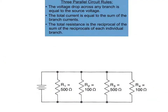Here's a second parallel circuit to work through — this one has four resistors. Our rules remain the same: voltage will be the same, total current adds up, and total resistance is the reciprocal of the sum of the reciprocals of each individual branch. Because this circuit has four values, it makes sense to use the reciprocal formula.